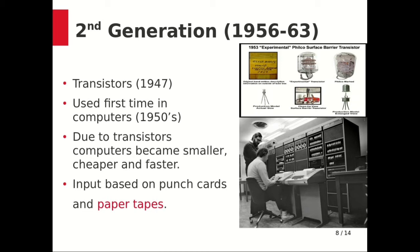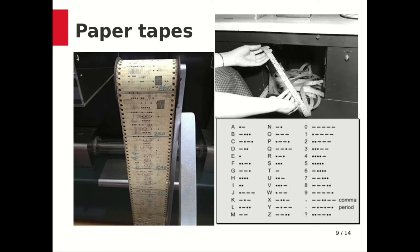The second generation of computers moved to assembly level language from binary machine level language. This language allowed programmers to specify instructions in words. High-level programming languages were also developed at the same time. The first computer of the second generation was developed for the atomic energy industry. You can see the paper tapes here and how they are inserted into the machine.